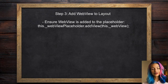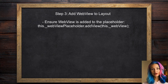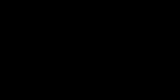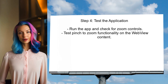In your implementation, verify that the web view is added to the layout correctly. This can be done by ensuring that the web view is added to the placeholder layout after it is created. Finally, test the application to see if the zoom controls are now visible and functional. You can do this by running the app and trying to zoom in and out on the content displayed in the web view.